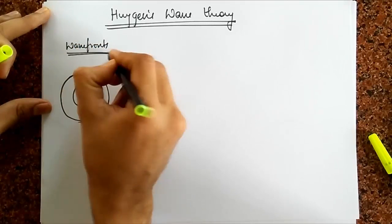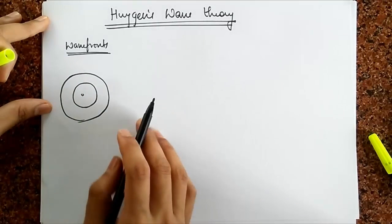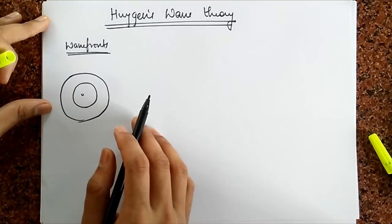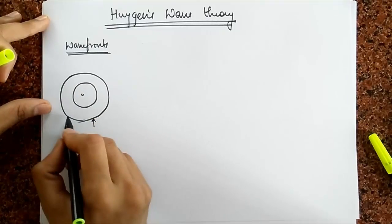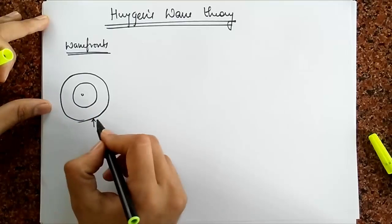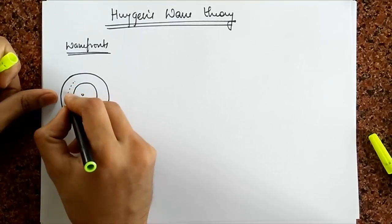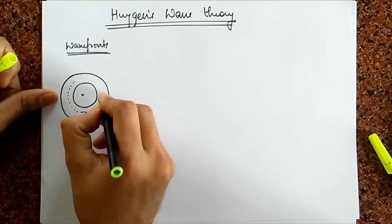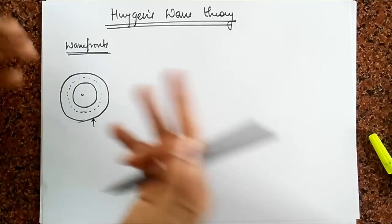Basically what these wave fronts are is that they are collections of particles which are in phase with each other. For example, if you consider this wave front, all the particles on this wave front may be at their maxima. And maybe there is a wave front over here, and all the particles on this one are at their minima, and so on.